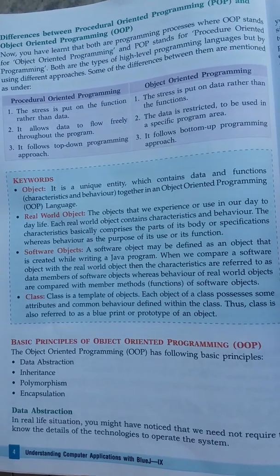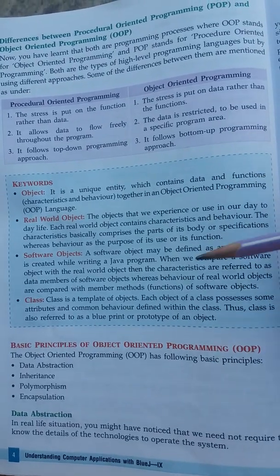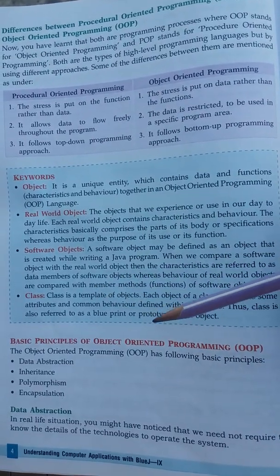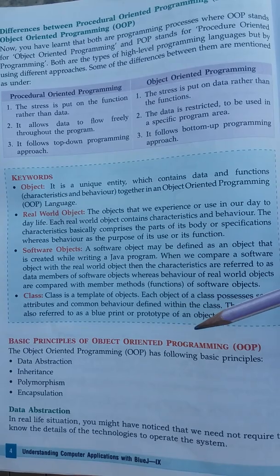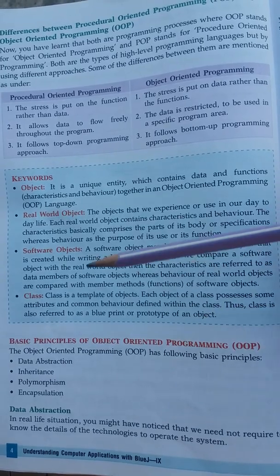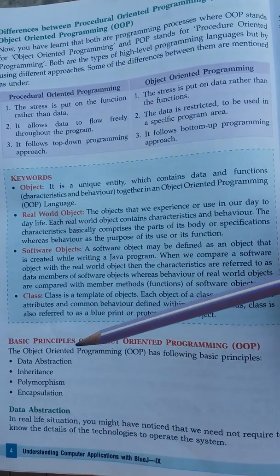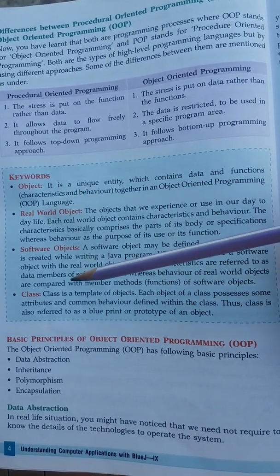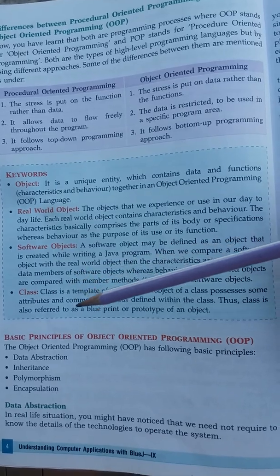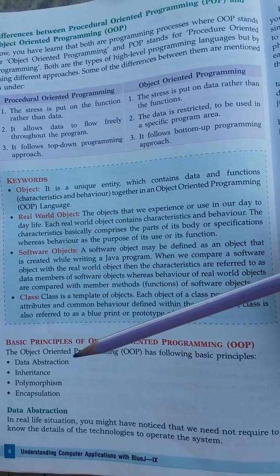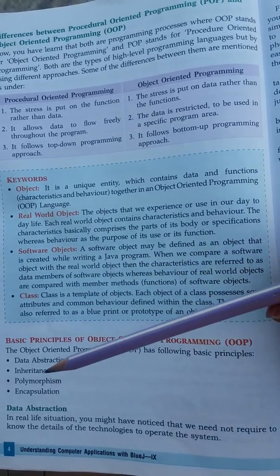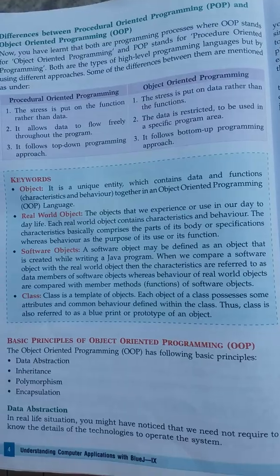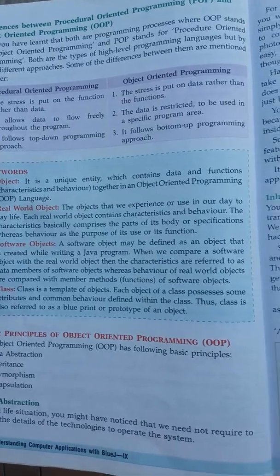Hello everyone, today's topic is basic elements of object-oriented programming. I had already talked about objects and classes. Now I am talking about data abstraction, inheritance, polymorphism, and encapsulation shortly.